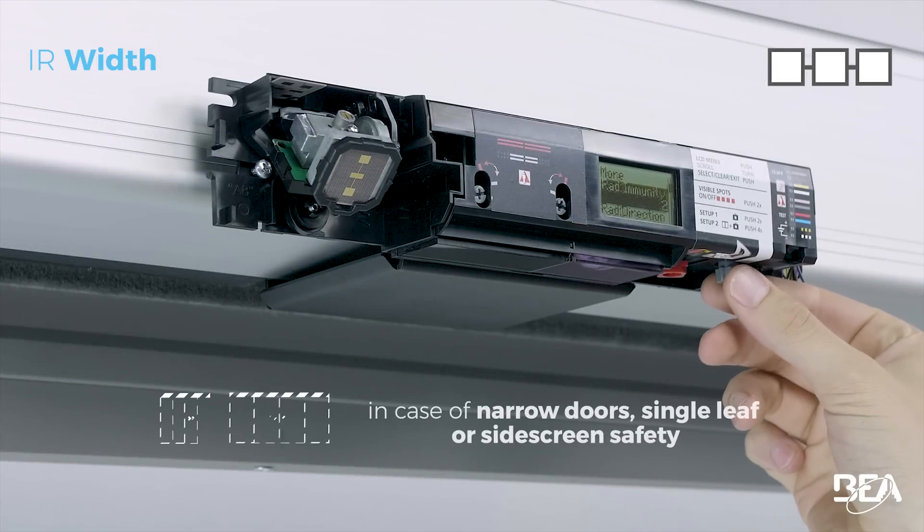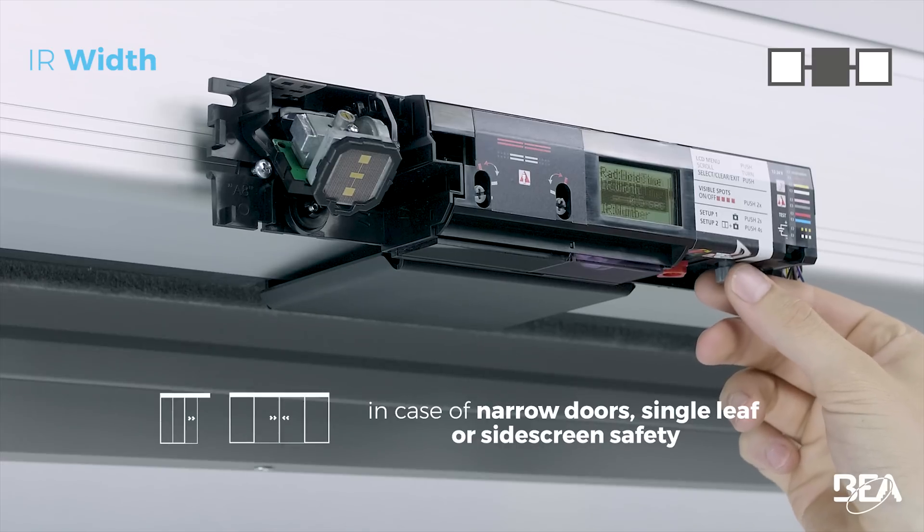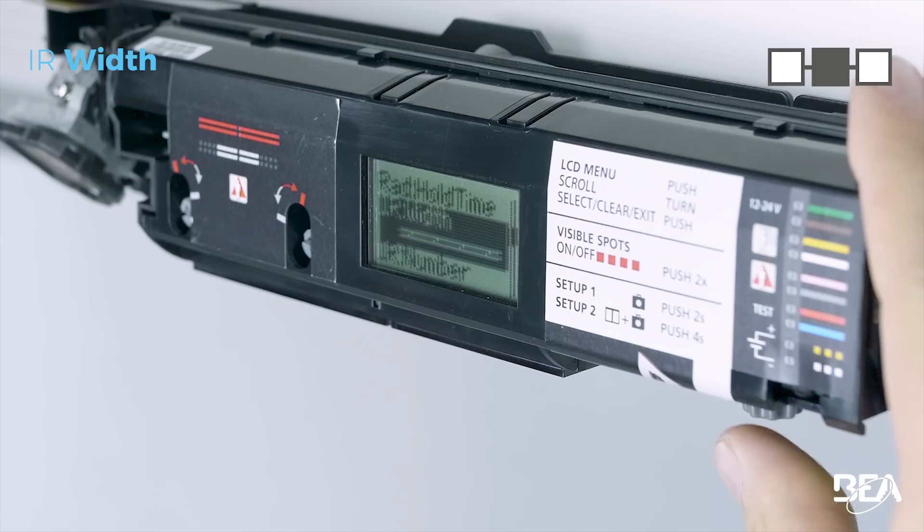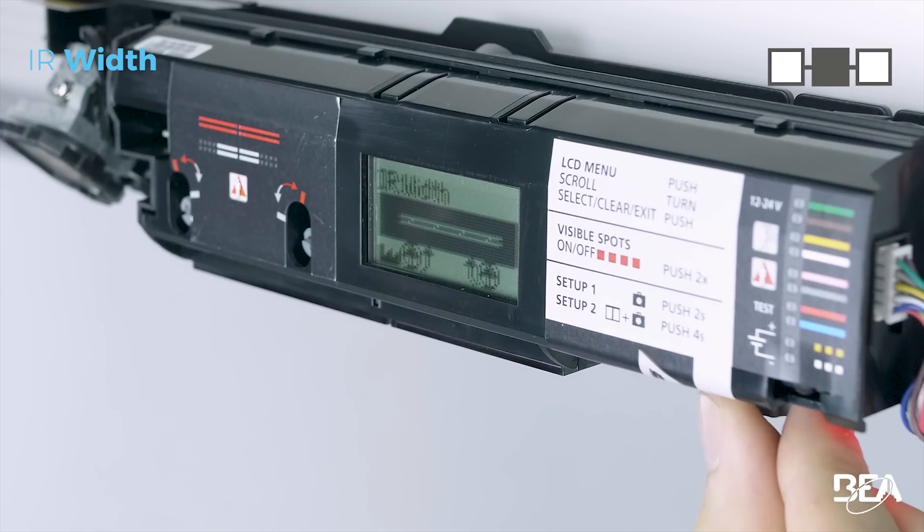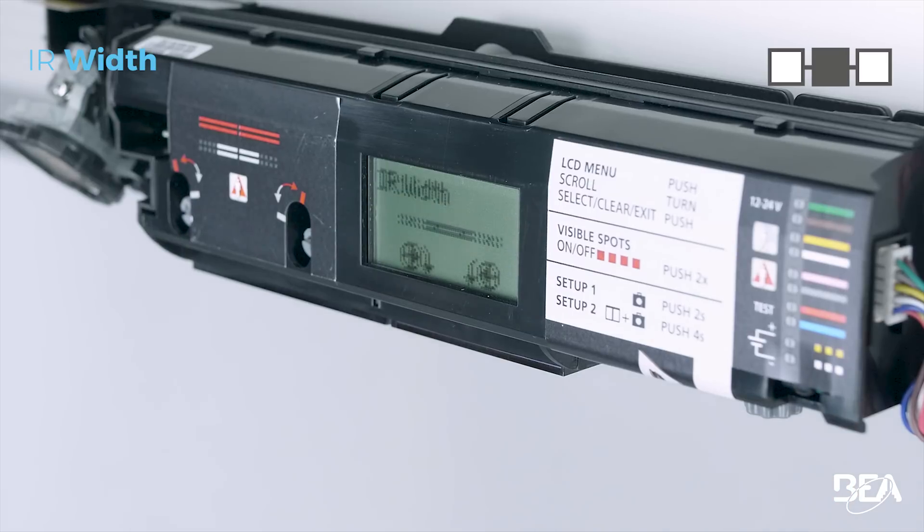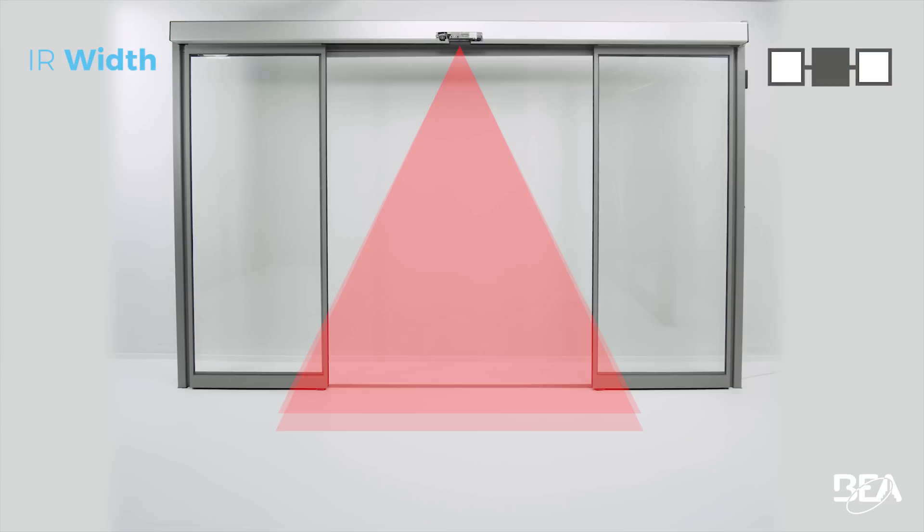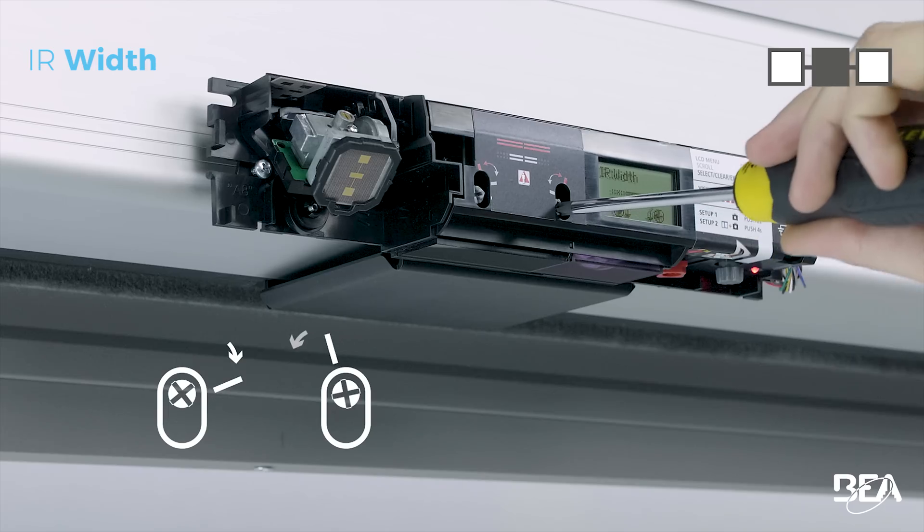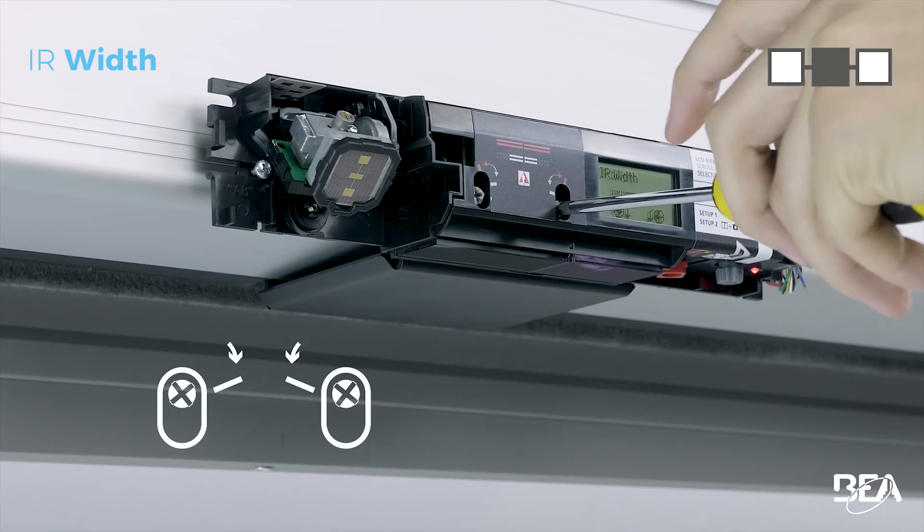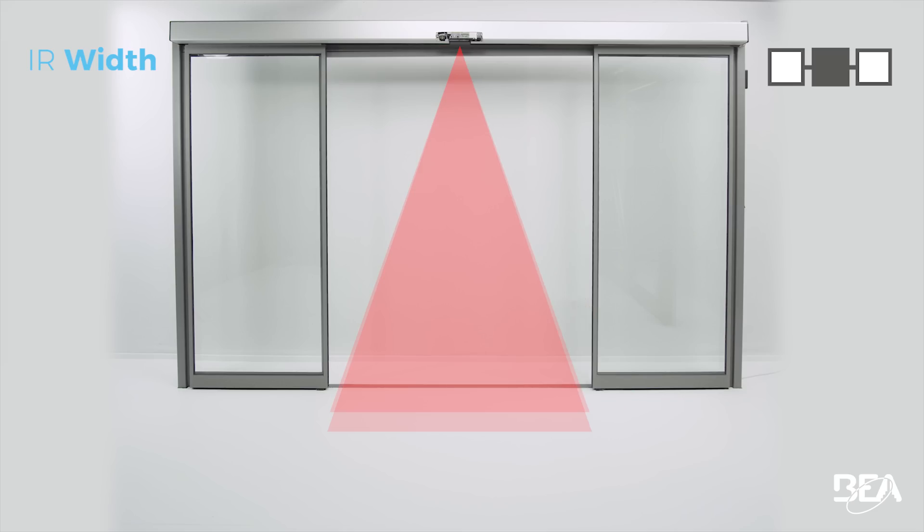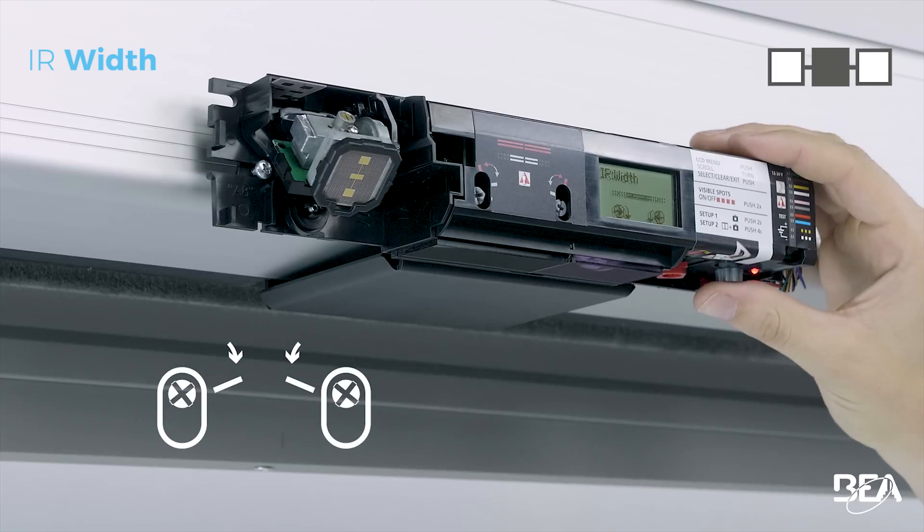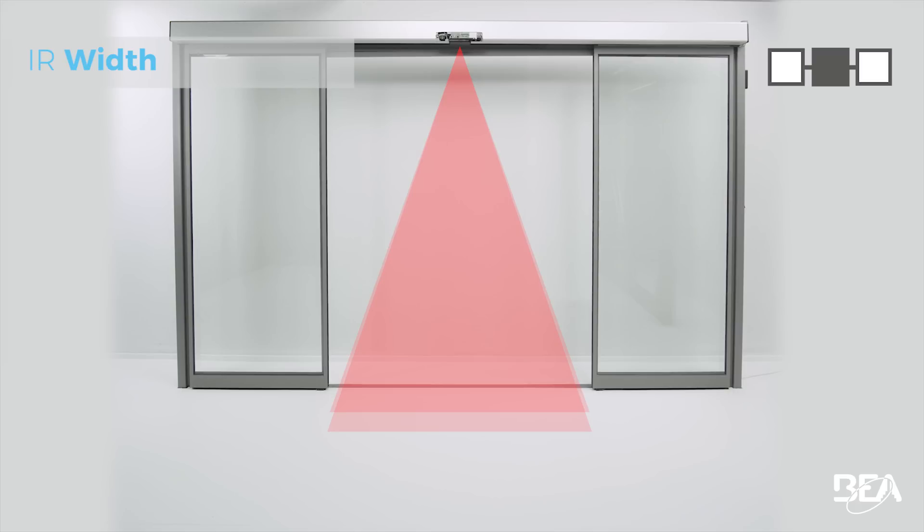In case of narrow or single leaf doors or side screen safety, adapt the width of the safety curtains. To do so, choose the desired width via LCD screen and adjust the arrow position accordingly. Make sure that the width of the door opening is fully covered. Always validate the position by pushing the grey button.